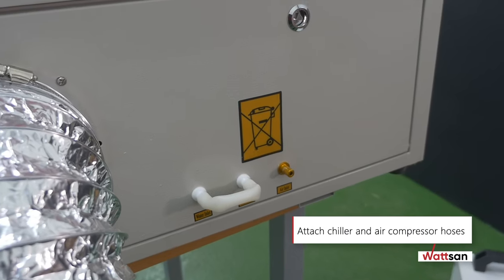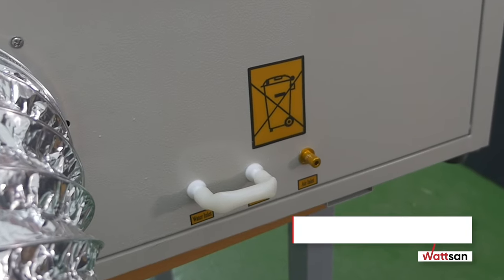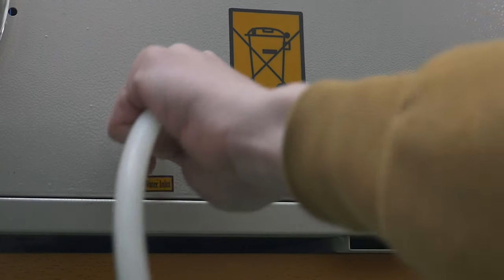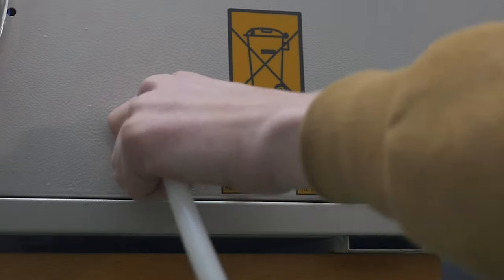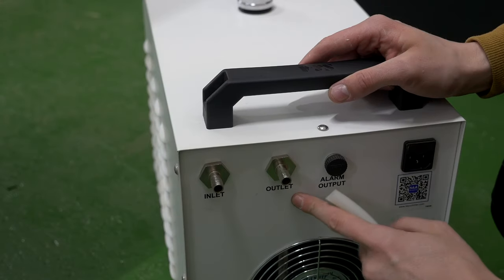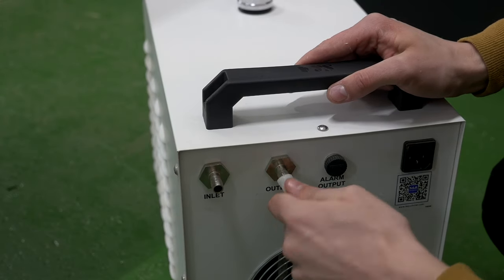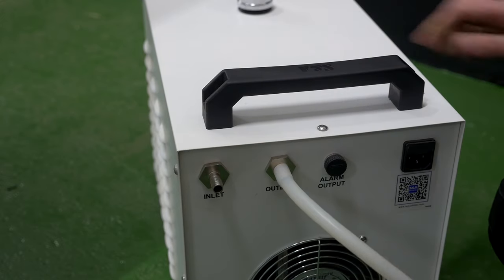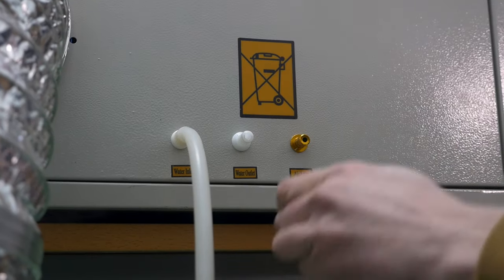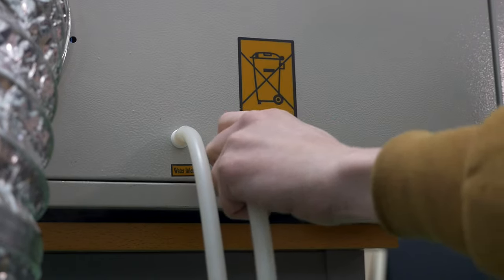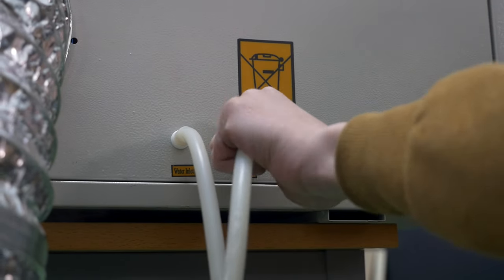Attach chiller and air compressor hoses. There are three hoses and, at the rear side of the machine, there are three couplings. One of them is for water outlet from the machine, the other one for water inlet into the machine.